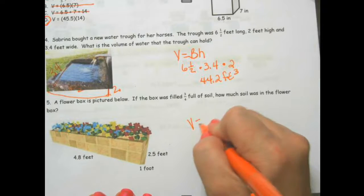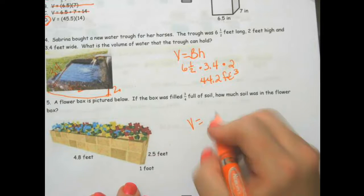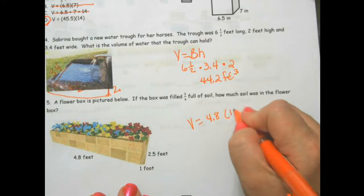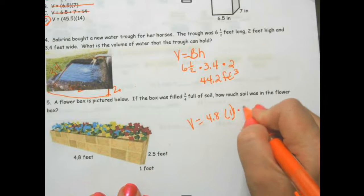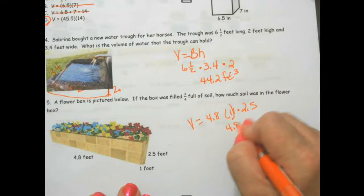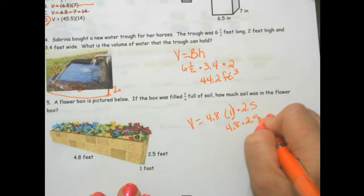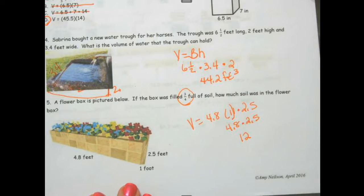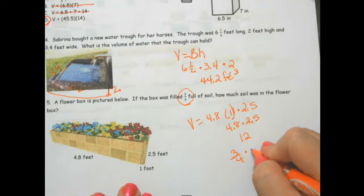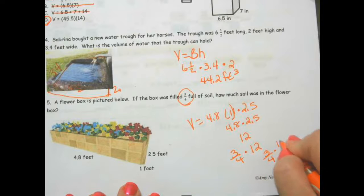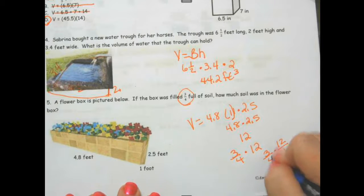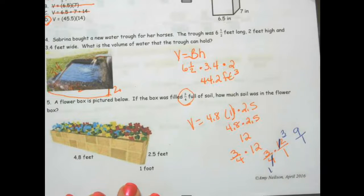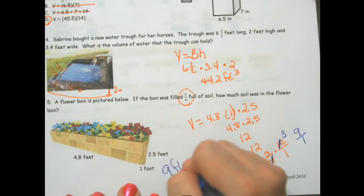Here I want to find the volume of this. 4.8 times 1 times 2.5. So 4.8 times 2.5, I'm going to get 12. But it's only 3 fourths of this. So 3 fourths times 12. 3 over 4 times 12 over 1, 9 over 1. So this is 9 feet cubed.